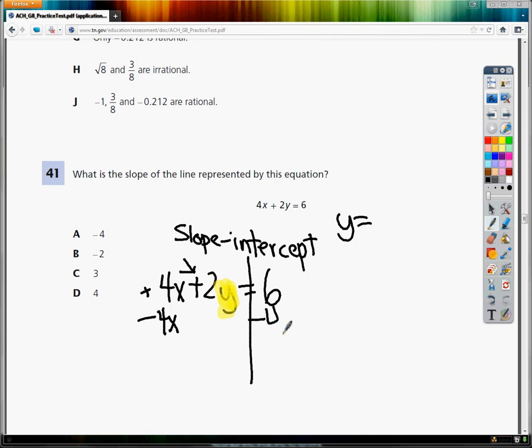Whatever I do to one side, I need to do to the other. These cancel out. So I'm going to bring down 2y is equal to negative 4x plus 6. I'm almost done. Now I need to get rid of times 2. So I'm going to divide by 2. I need to divide everything by 2.